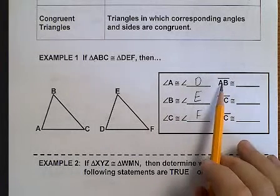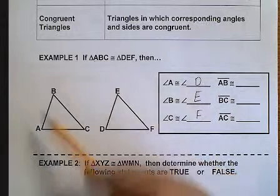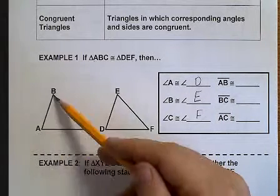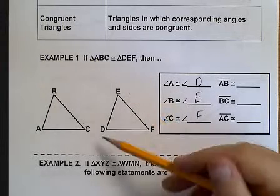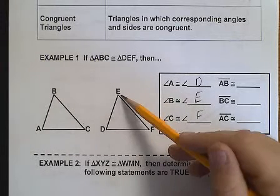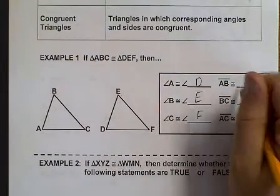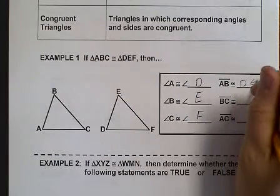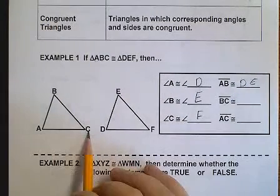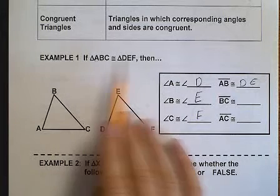So we talk about line AB, then congruently we'll be talking about DE. Notice that it's AB, and then DE. Now if we say BC, then we want EF.